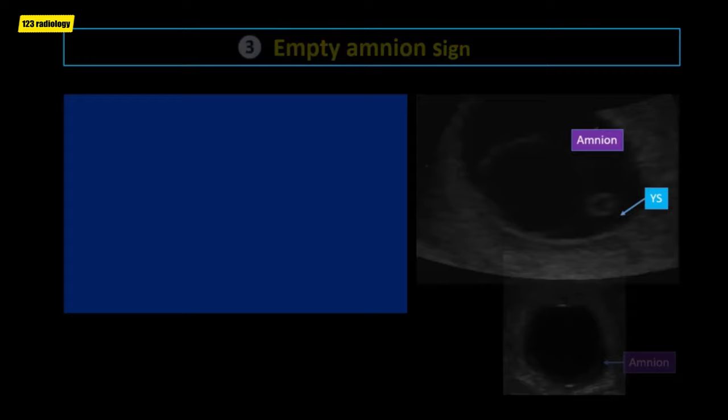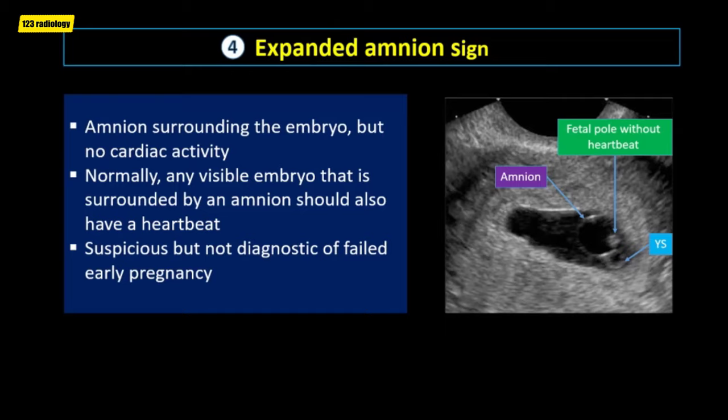The expanded amnion sign is defined as an amnion visible surrounding the embryo but with no cardiac activity. Normally, any visible embryo surrounded by an amnion should also have a heartbeat, regardless of crown rump length. An absent heartbeat in this context is suspicious for early pregnancy loss. The expanded amnion sign has been described as a poor prognostic sign in early pregnancy, suspicious but not diagnostic of failed early pregnancy.